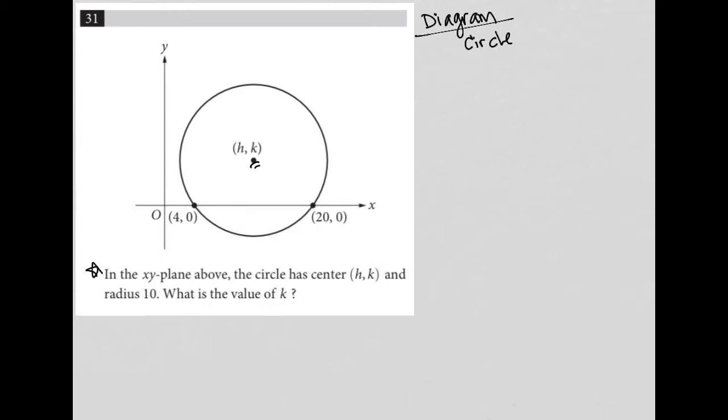And radius 10. So that was not drawn here. So I'm going to draw it in to the diagram myself. So that's one of the first rules of diagram questions. Label them with any provided information. And then the question just asks us what the value of k is.